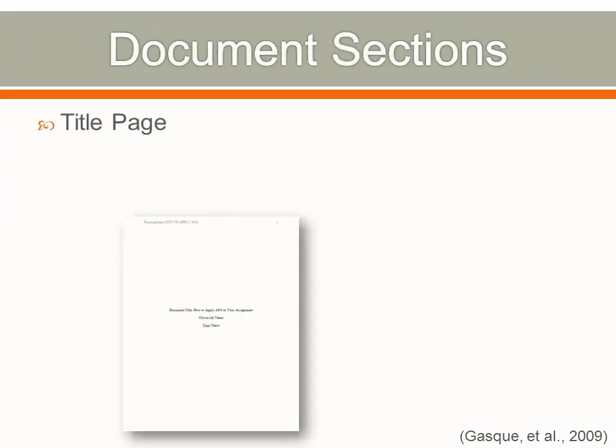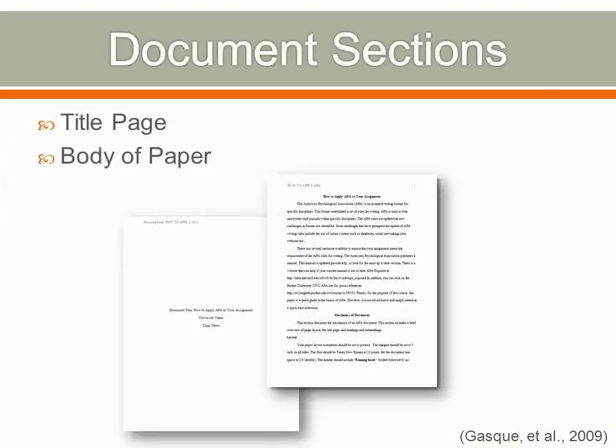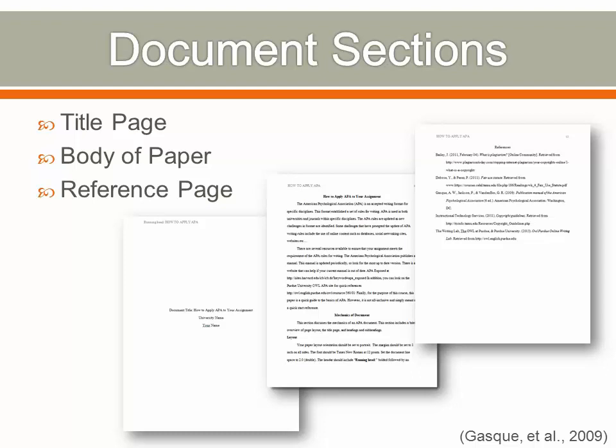The main parts of the document include the title page, the body of the paper, and the reference page. A separate page for the abstract may or may not be required in your assignment. Be sure to check your assignment's requirements to determine if the abstract is required. You should not arbitrarily add an abstract to the paper unless the instructor requires one.